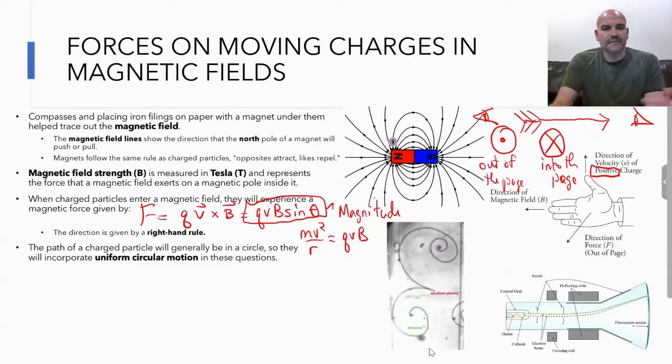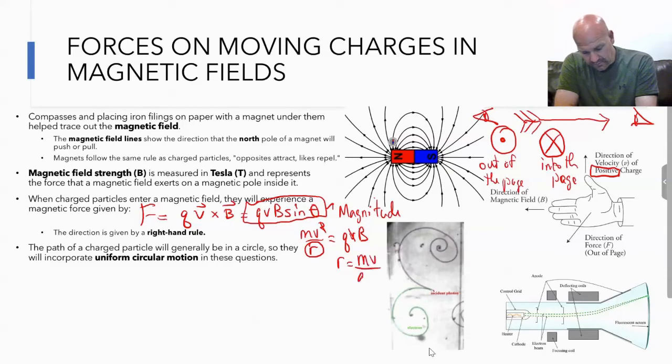You can do a little bit of algebra. You cancel the v on the right with one of the v's on the left, and sometimes they'll ask you for the radius, so r would be equal to mv over qB.